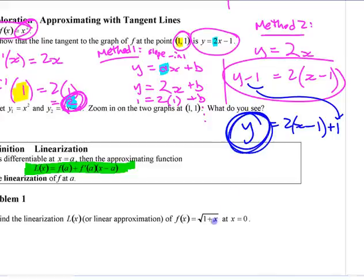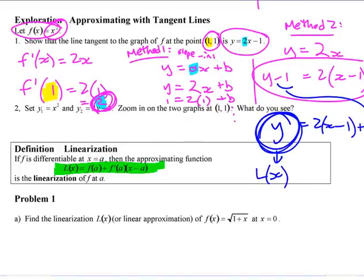This is our linear approximation here. They use L of x for that, linear approximation. L of x is the linear approximation of that function at x equals a. So let's label this here. This is linear approximation of f at x equals a.